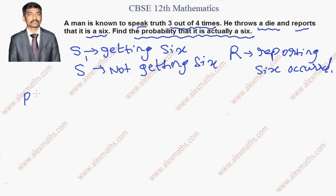Now as per the question, he throws a die and reports that it is a 6. So we know that he is reporting that 6 occurred, and we want to know what is the probability that it is actually 6. So we have named actually 6 as getting 6 as S. So we have to find P of S by R.